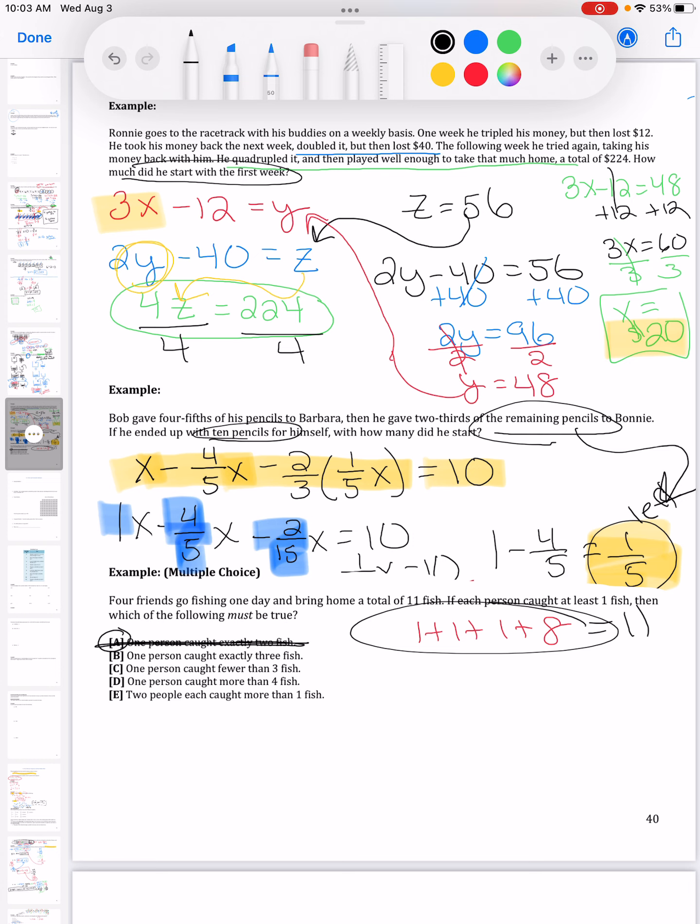So this is not true. I can make it be true, but the question asked which one has to be true, there's no way around it. It has to be true. Number two or part B here, one person caught exactly three fish. Well again my example, nobody had three fish so that one's not true.